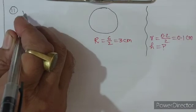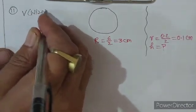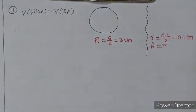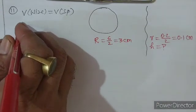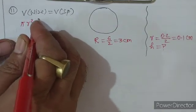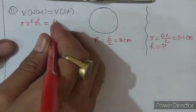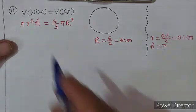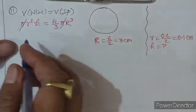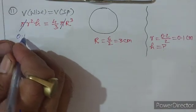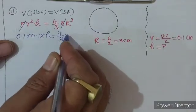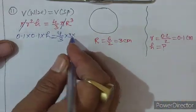जब एक चीज़ को melt करके दूसरी चीज़ बनाते हैं तो दोनों के volume equal होने चाहिए। Volume of wire = Volume of sphere। π r² h = (4/3) π r³। π से π cancel करेंगे। Wire की radius = 0.1 cm, sphere की radius R = 3 cm। 0.1 × 0.1 × h = (4/3) × 3 × 3 × 3।